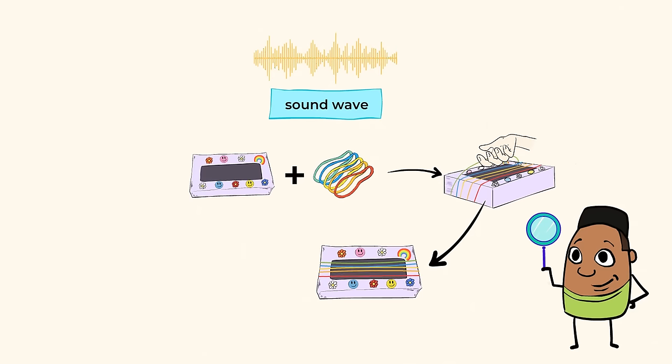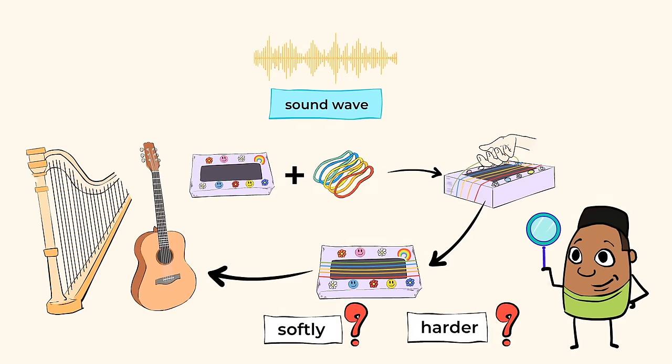The rubber bands vibrate when you pluck them, and you'll hear a sound. Try plucking some of them very softly. How does that change the sound that you hear? What if you pluck a rubber band harder? Do you hear a louder sound? All instruments with strings work this way. But other instruments are great too for learning about how sound is produced.